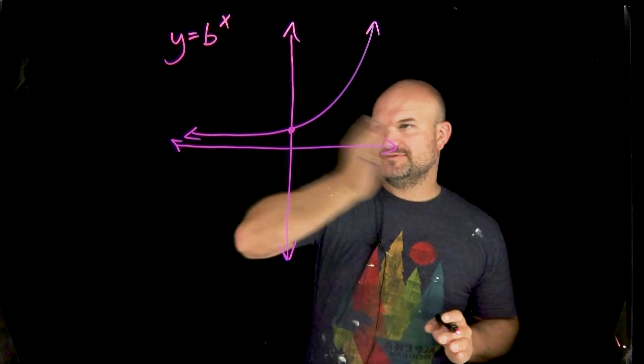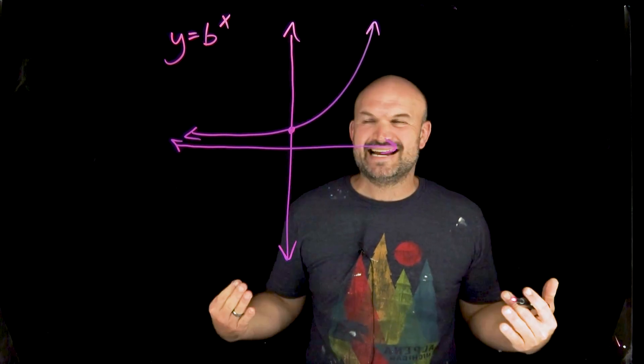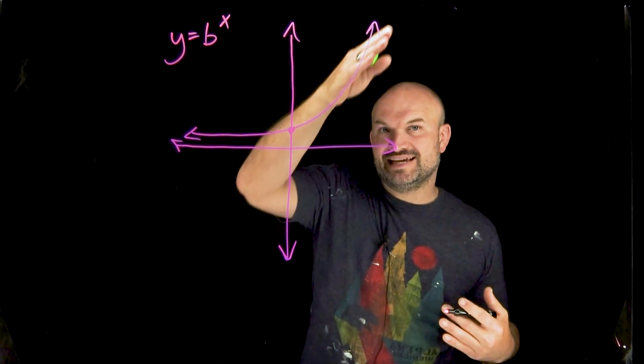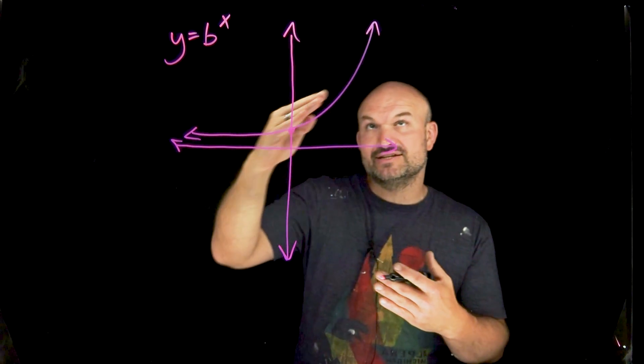Looking at this graph, as you go from left to right, there's a couple things that should kind of stand out to you. One, the graph is always going to be increasing. Going from left to right, it's always going up and up.